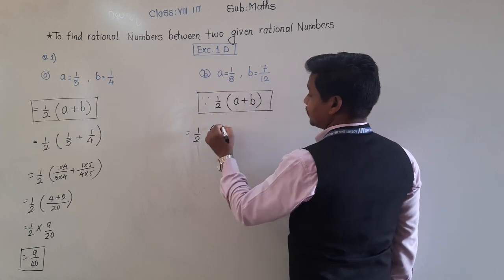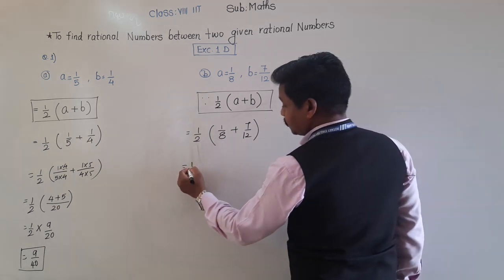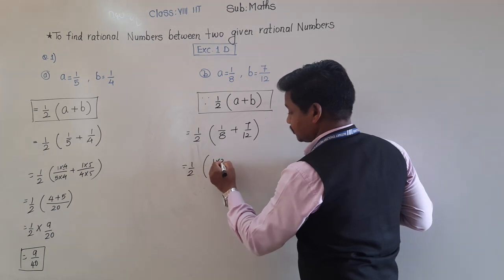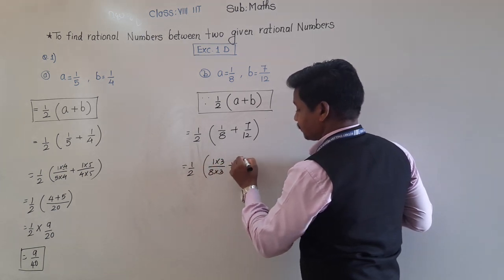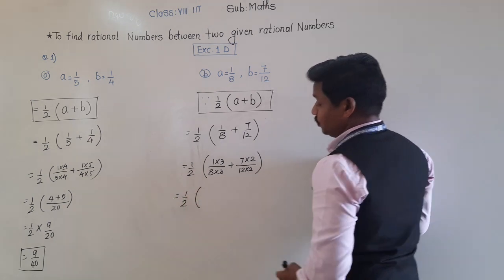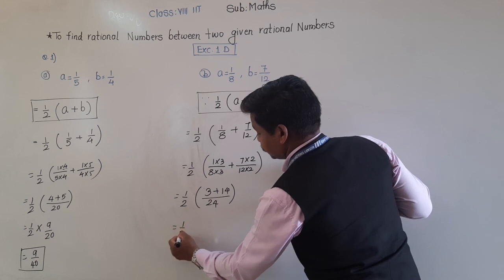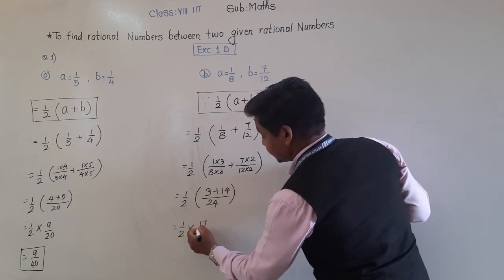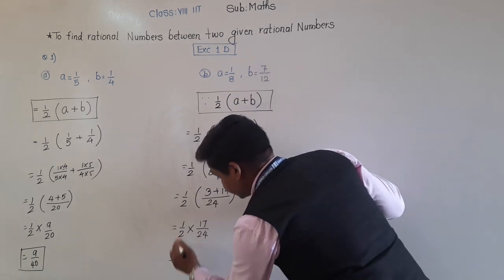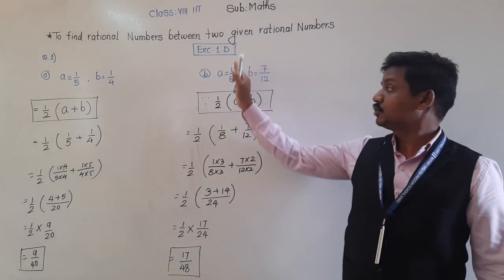So: (1/2) × (1/8 + 7/12). The LCM of 8 and 12 is 24. We get (3/24 + 14/24) = 17/24. Then (1/2) × (17/24) = 17/48. So 17/48 is the rational number between 1/8 and 7/12.